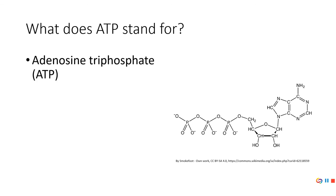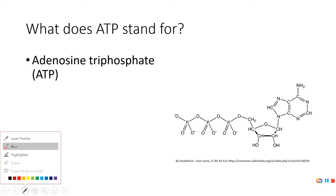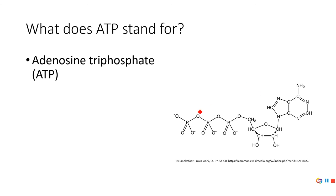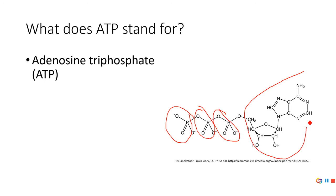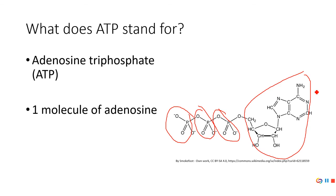ATP stands for adenosine triphosphate, and that's what we use to get energy. Each of these right here is a phosphate group — we've got three: one, two, and three. The rest of the molecule is called adenine. You'll never need to diagram this, but that's why it's called adenosine triphosphate — one adenosine molecule with three phosphate molecules. Each of these lines signifies a chemical bond, and a chemical bond is where we have stored energy.